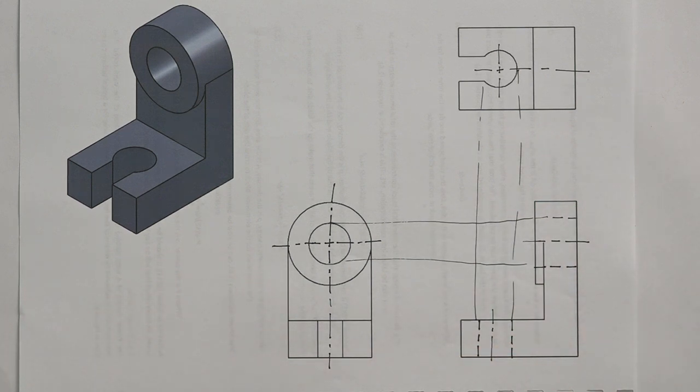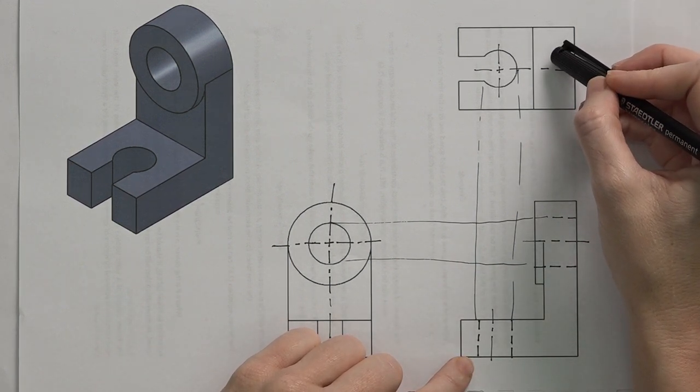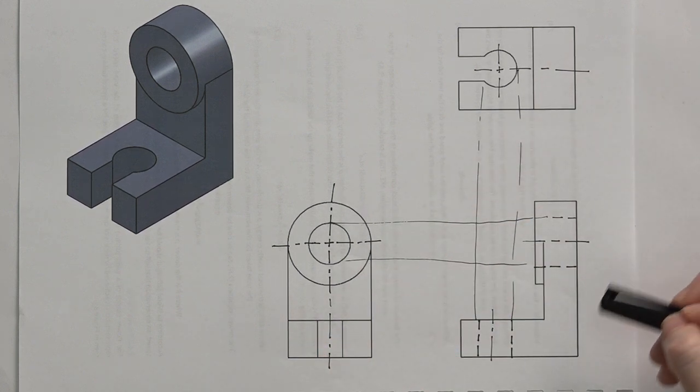And that's all the hidden detail we need. We will not have to do the hidden detail for the slot here or the hidden detail for the circle there as well. Just on one of the views is more than enough to show that it's actually cutting it right through.